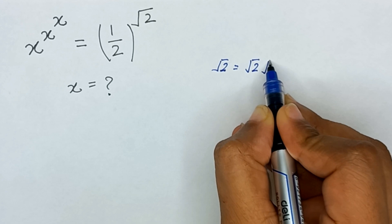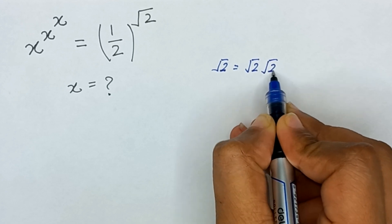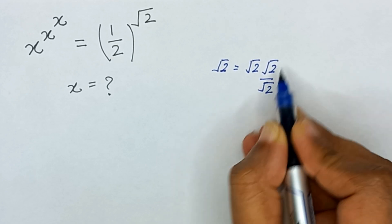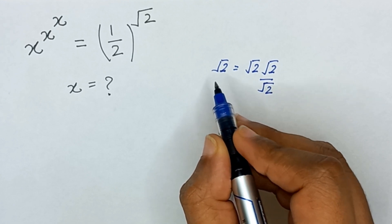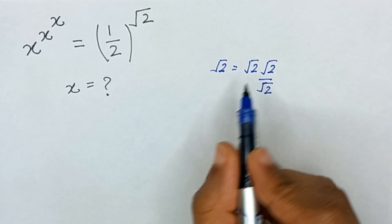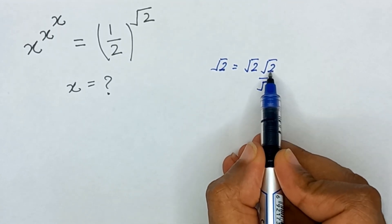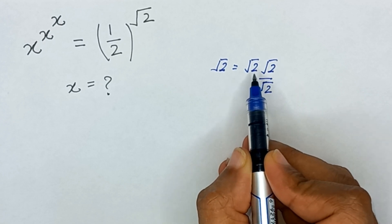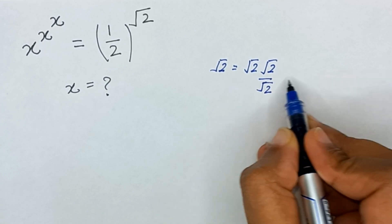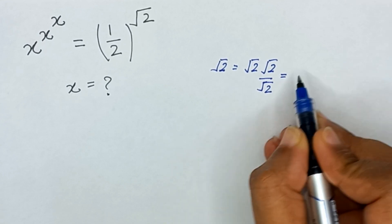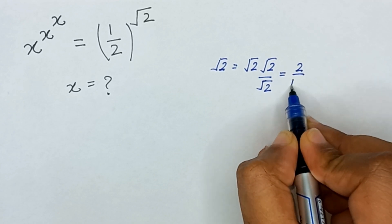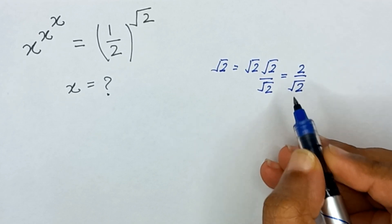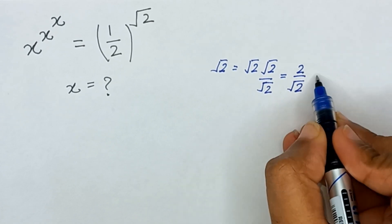Here we have a power square root of 2. So square root of 2 times square root of 2, divided by 2, is also the same as square root of 2. When square root of 2 and square root of 2 multiply, it becomes square root of 2 squared, which is equal to 2. So it will become 2 divided by square root of 2.